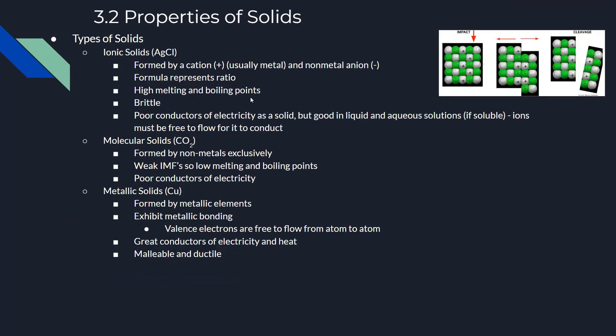Moving to 3.2, types of solids. The first type is an ionic solid, formed by a cation (usually a metal) and an anion (a nonmetal). The formula represents the ratio of cations to anions. Ionic solids have high melting and boiling points, are brittle, and are poor conductors of electricity as solids, but excellent conductors in liquid or aqueous solution when soluble.